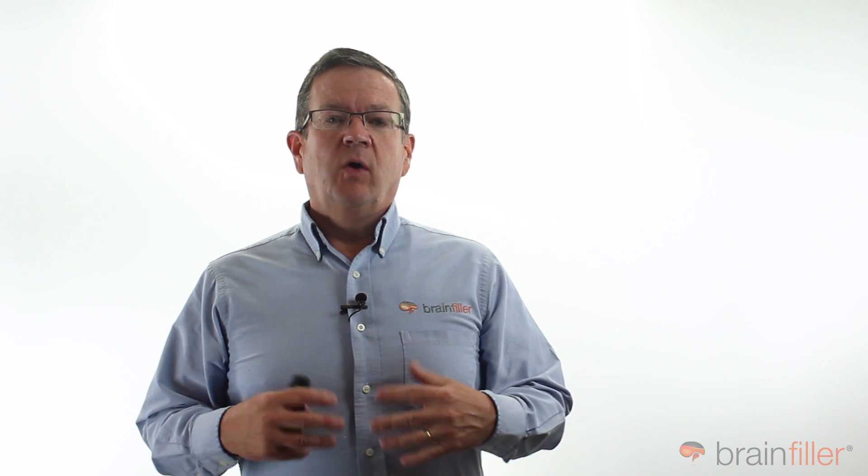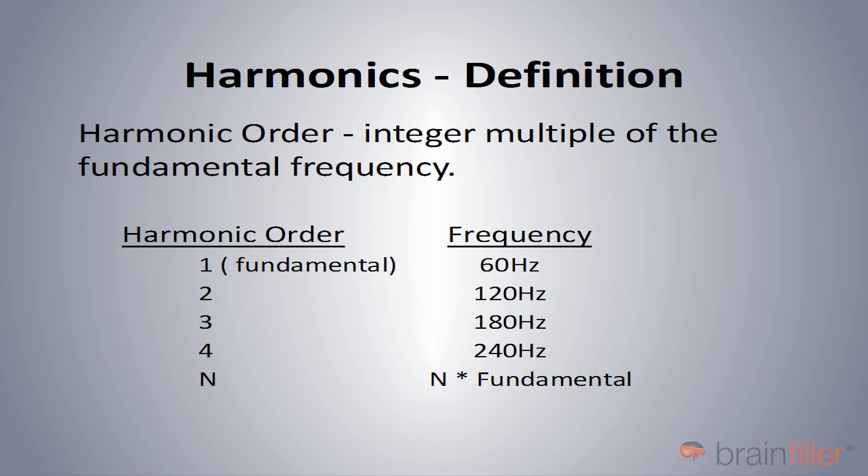What are harmonics on a power system — an electrical distribution system? Harmonics, the way that we look at these, they're really just a multiple of a given frequency. So for example, in the United States, we talk about 60 Hz as being our fundamental frequency.